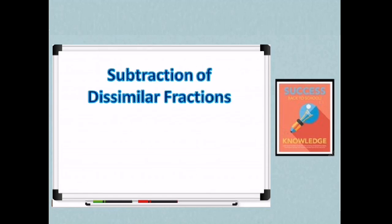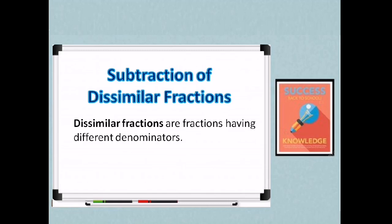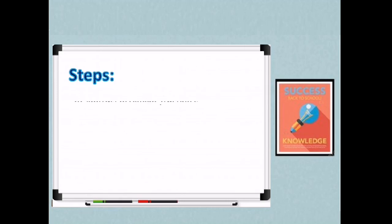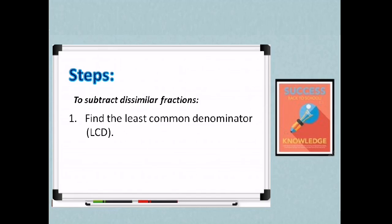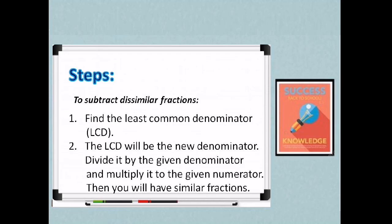Next, subtraction of dissimilar fractions. Again, when we say dissimilar fractions, these are fractions having different denominators. So here are the steps that we need to follow in subtracting dissimilar fractions. First, find the least common denominator or the LCD. So ahanap tayo ng pinakamababang pwedeng i-divide sa both denominators without remainder. And that is the LCD.